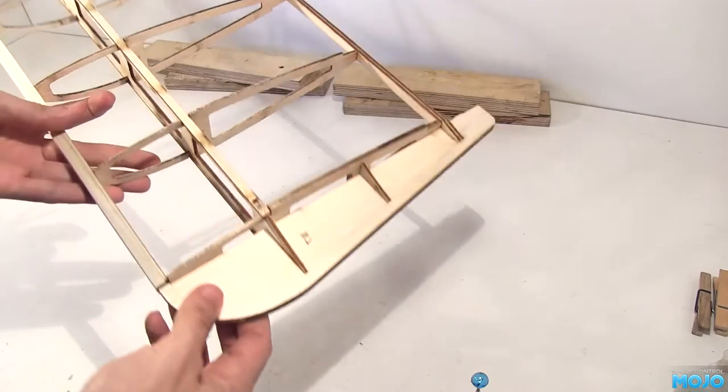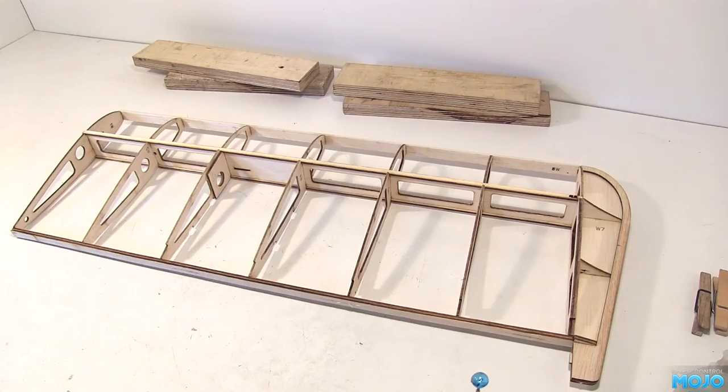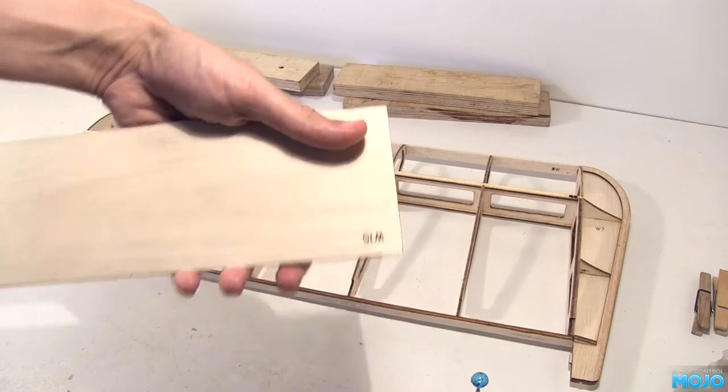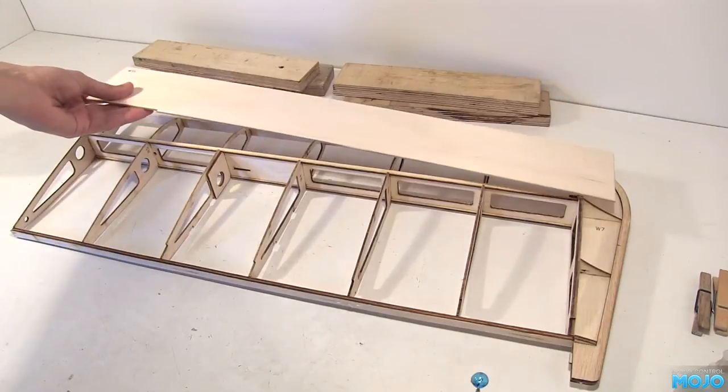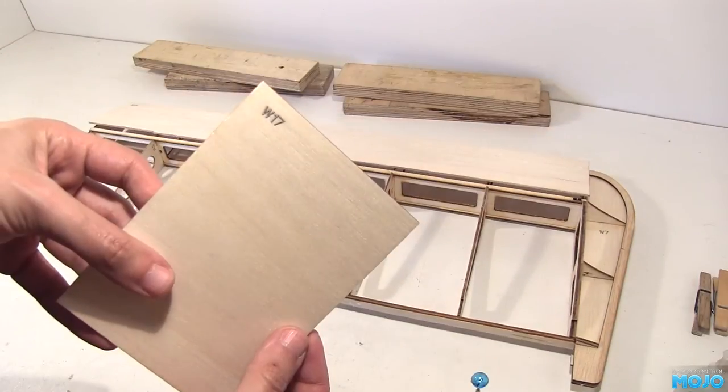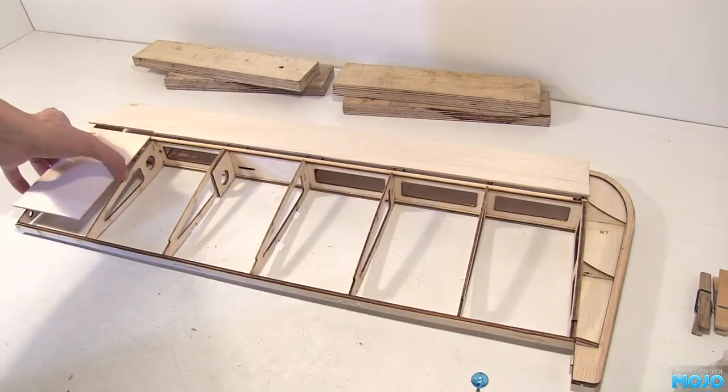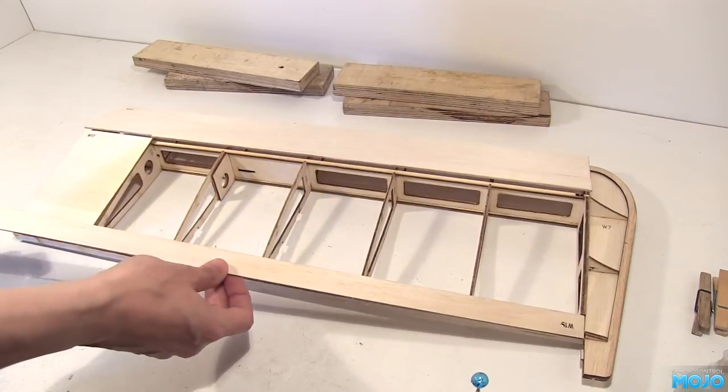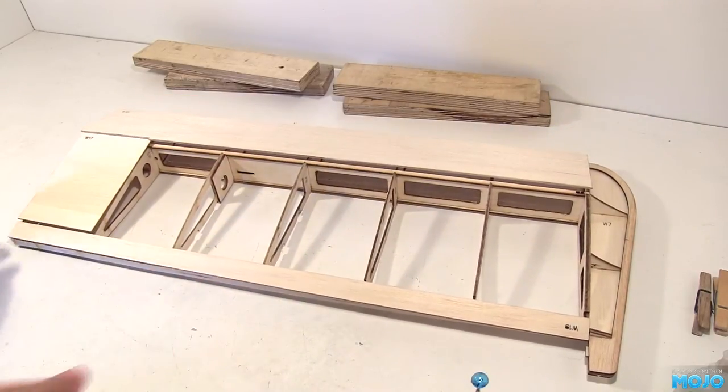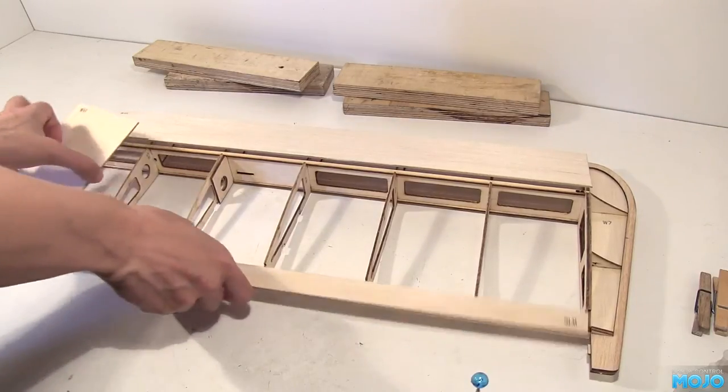Next up, sheeting. Top surface first. W15 is the leading edge sheet. It's got a cut out for the root sheet, W17. And there's W19, the trailing edge sheet. All nicely cut. Worth noting W17 is a little bit oversized so that will need to get a trim. We will go into that in a couple of minutes.